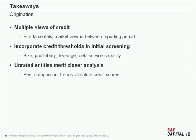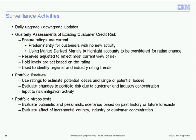Before moving on to surveillance, a quick recap: it is important to look at multiple views of credit — fundamentals, market views (which are important between reporting periods) — and at credit thresholds during the origination process. It's possible to quickly screen for size, profitability, leverage, and debt service capacity. Definitely want to focus on unrated companies, where there is an element of uncertainty, doing peer comparisons, looking at trends, and also absolute credit scores. With that, I'll hand it back to Kevin to speak about surveillance.